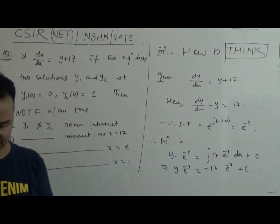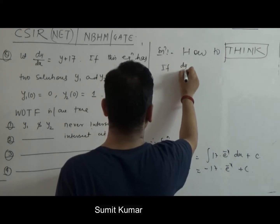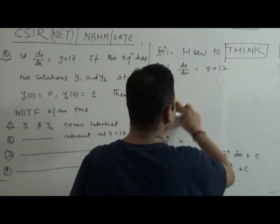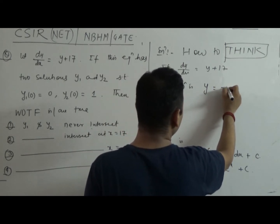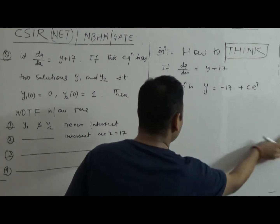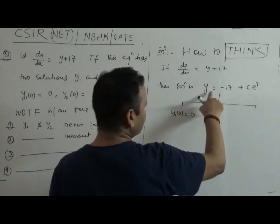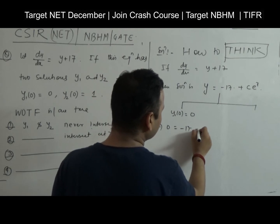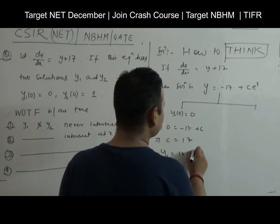Now use the initial conditions. The general solution is y = −17 + C·e^x, where C is an arbitrary constant. For y1: if y1(0) = 0, then 0 = −17 + C·e^0, so C = 17. Therefore y1 = 17·e^x − 17.